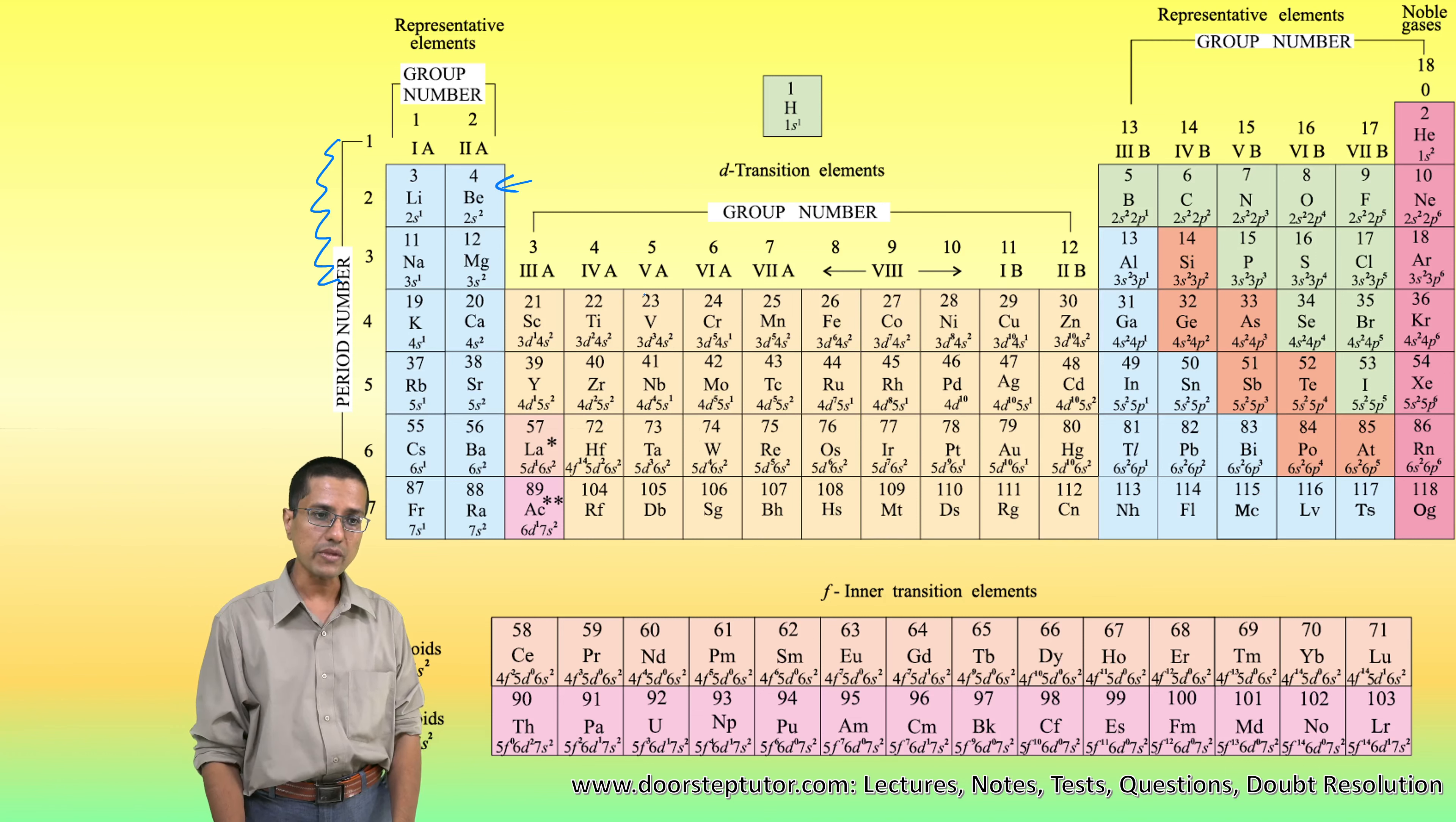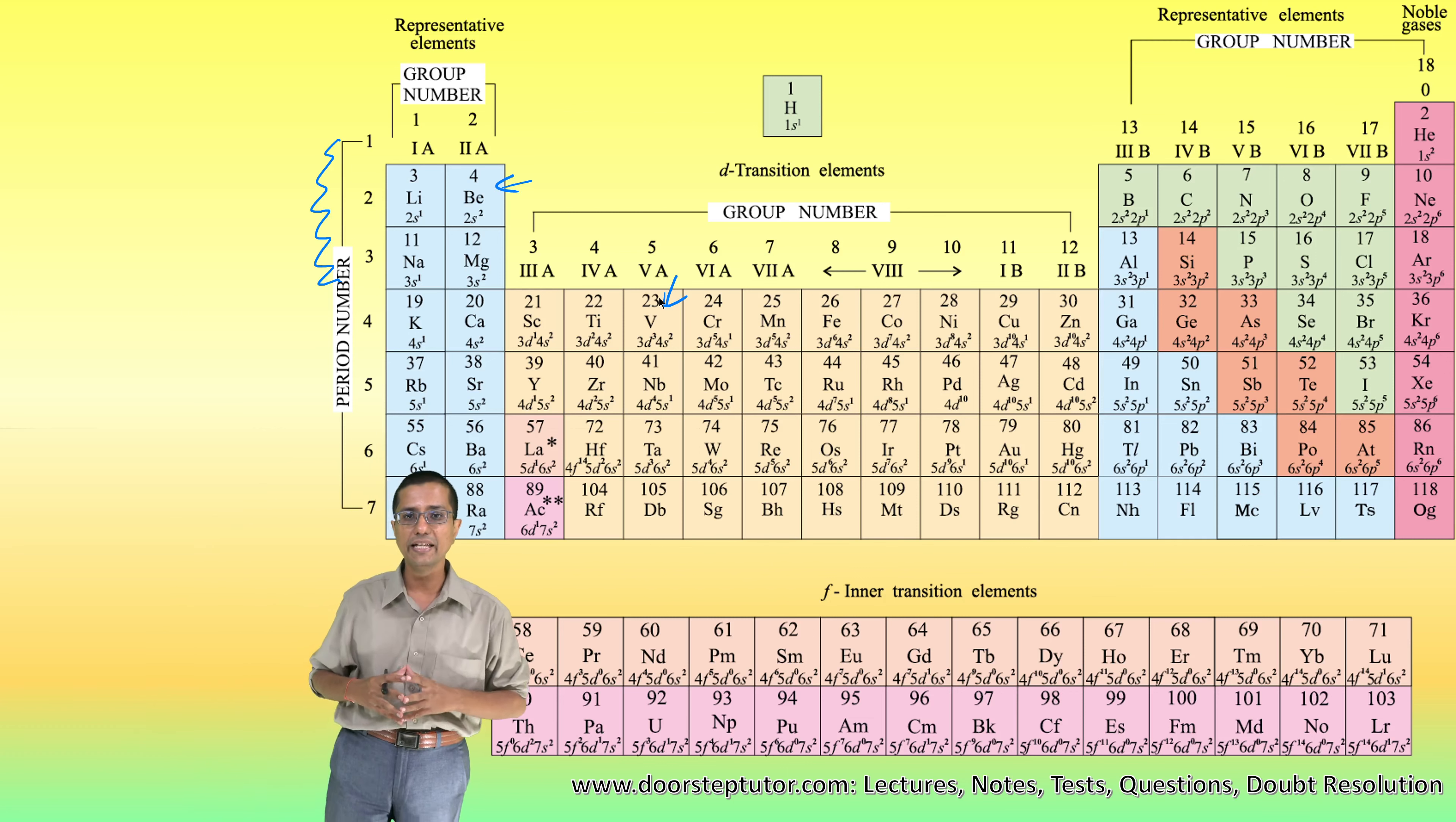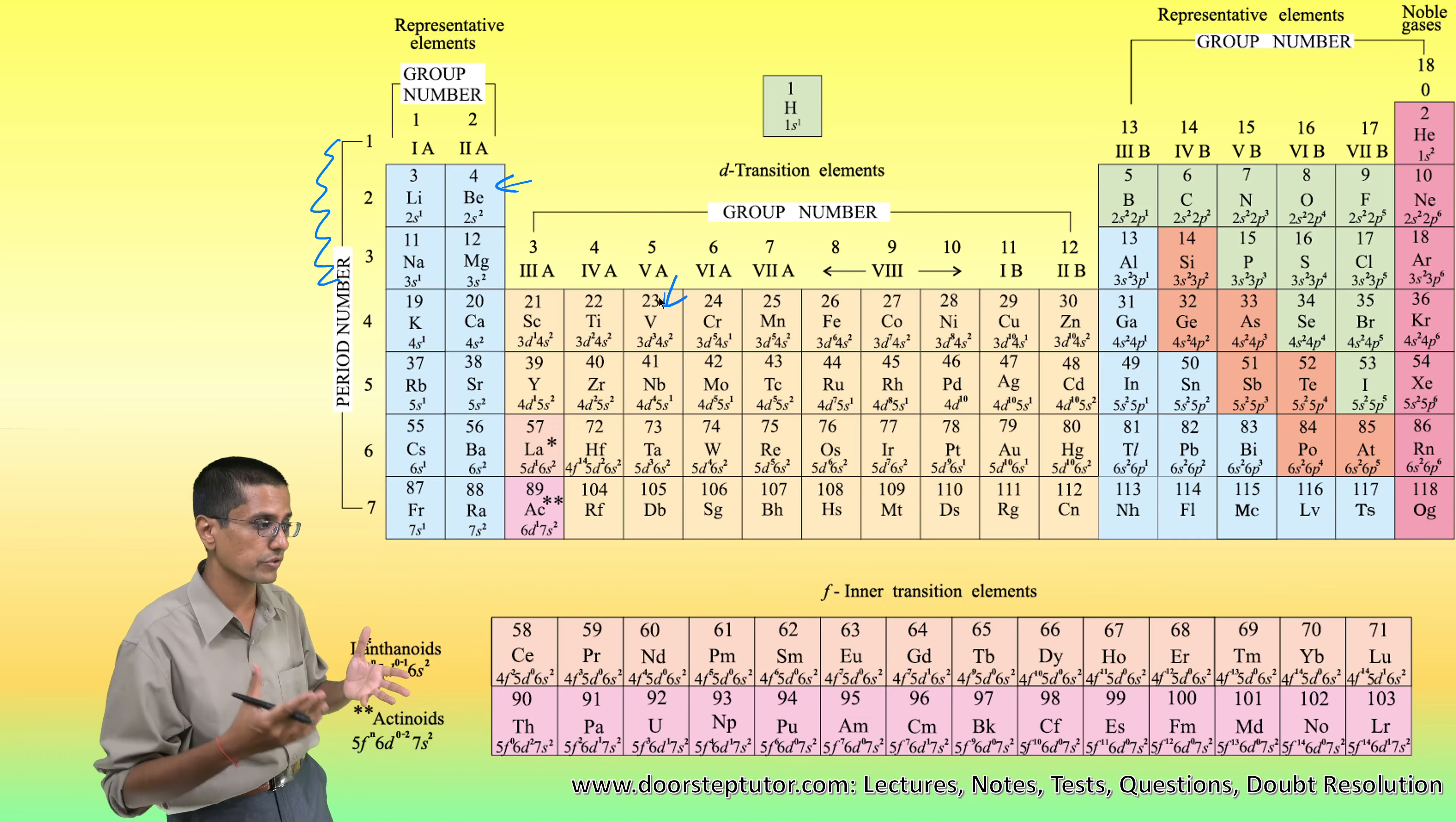For others, especially for the transition elements, it is the d orbitals, the 3d, the 4d, those orbitals. The electrons in those orbitals are predominantly responsible for their multiple valences, their special properties like multiple valences, their colors and those things.